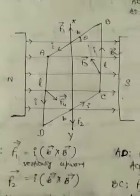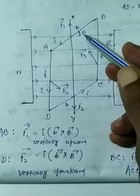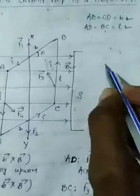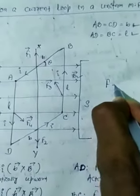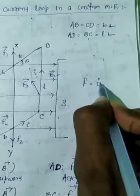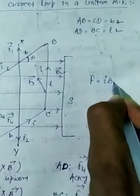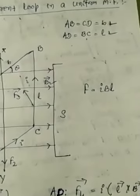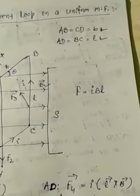Since all the conductors AB, BC, CD and DA are inside the magnetic field carrying a current, each conductor creates a force because it is situated inside the uniform magnetic field. As we know, the force upon a conductor placed in a uniform magnetic field is given by F equal to BIL. Whenever a conductor carrying current is placed in a uniform magnetic field, it experiences a force given by F equal to BIL.